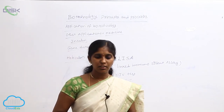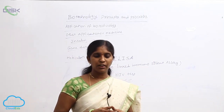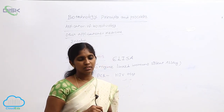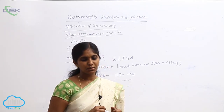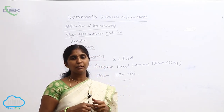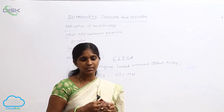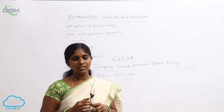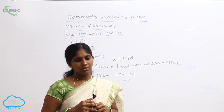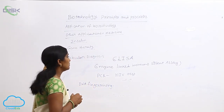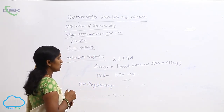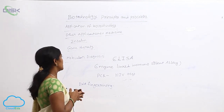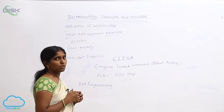ELISA is based on the principle of antigen-antibody interactions. Infection by a pathogen can be detected by the presence of antigens or by detecting the antibodies synthesized against the pathogen. ELISA — enzyme-linked immunosorbent assay — is used for early detection, especially in molecular diagnosis.